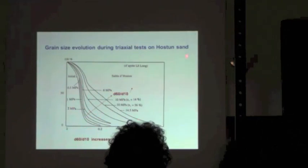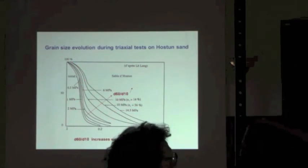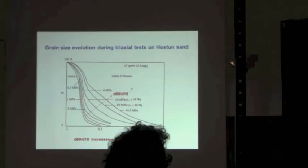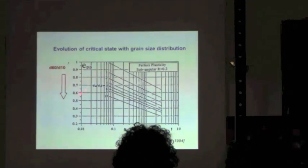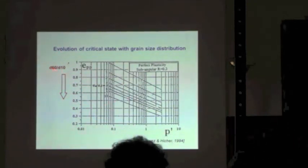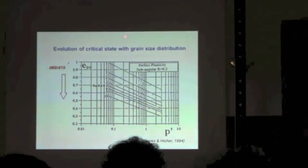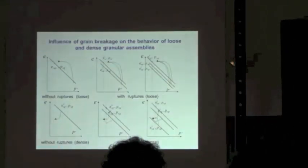Looking at some results performed by LeLong in Grenoble, you can see that systematically there is an increase of the coefficient of uniformity, given here by the ratio D60 over D10. If you look at the evolution of the grain size distribution when there is grain breakage, you find that D60 over D10 increases. The consequence is that if you increase this coefficient, there is a shift downwards of the critical state line in the e–log P' plane.